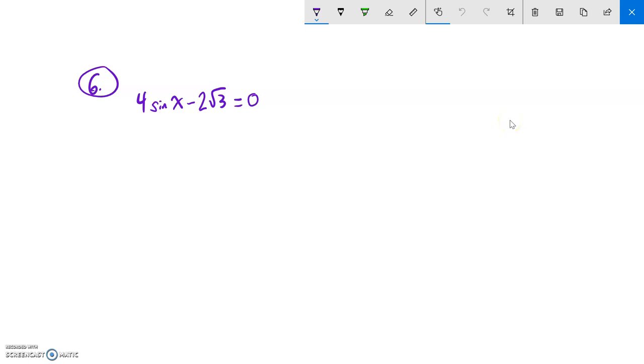This is the final practice for Math 142, question number six. We're supposed to solve it, and our solution should be bounded from zero to two pi, and we're looking for exact values.